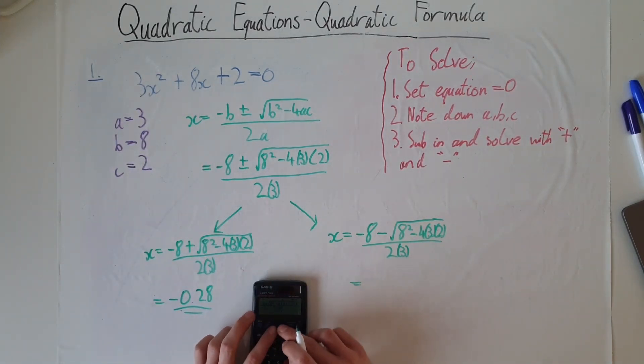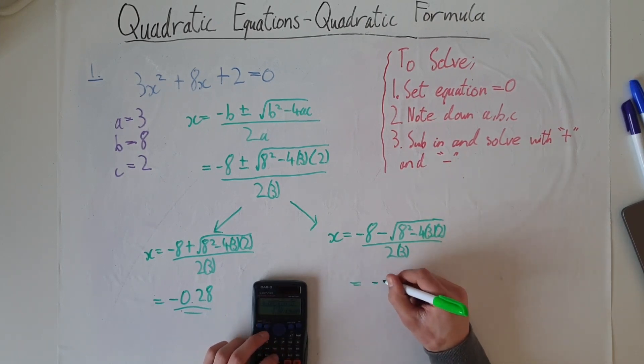And then here, all we have to do now is just go back in your calculation and switch the positive sign here to negative, to give us our second root of negative 2.39.